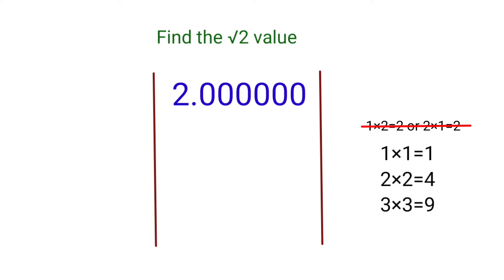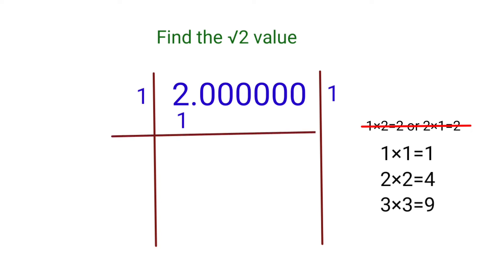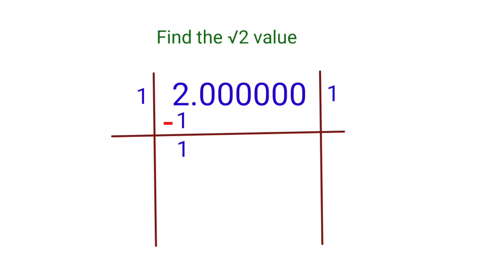So 1×1=1. Write 1 in the quotient and 1 in the divisor position. The result 1 goes here. Now subtract this 1 from 2, giving us 1. Then we bring down the next 2 zeros.